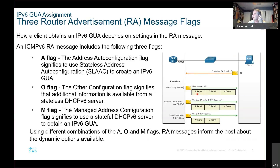PC1 comes online and says it needs a router advertisement from R1. R1 gets the signal and replies with these flags. If just the A flag is set, these other two would never be set. If the A flag is set, it says, here's everything you need — go make your address. I'll show you how the host creates its address using its MAC address in a little bit.